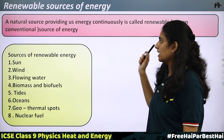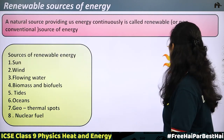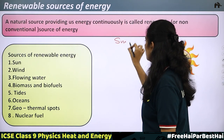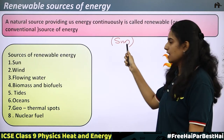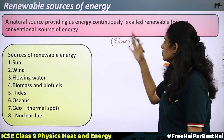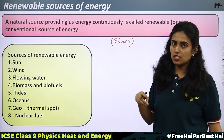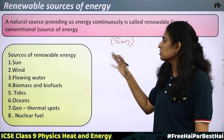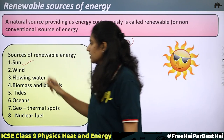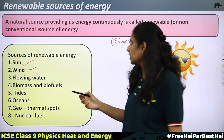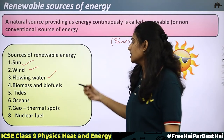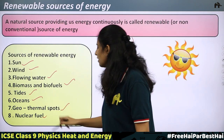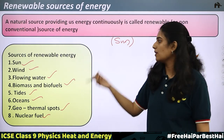Renewable sources of energy: a natural source providing energy continuously is called a renewable or non-conventional source. The renewable sources include: sun, wind, flowing water, biomass and biofuels, tides, oceans, geothermal spots, and nuclear fuel. Sun is the most significant source, providing energy till the universe exists. It is used by other bodies for producing wind energy, tidal energy, and ocean waves. Let's discuss each one in detail.